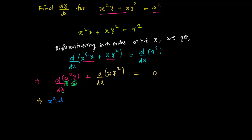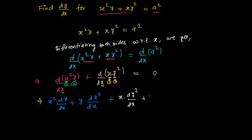The product rule gives: first function times derivative of the second function, plus second function times derivative of the first function. Similarly for x y squared, x is one function and y squared is another — again one function multiplying another. So we apply the product rule again: first function times derivative of second function, plus second function times derivative of first function, equals zero.